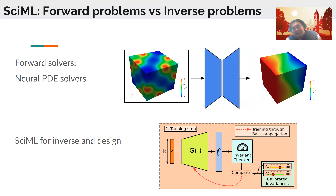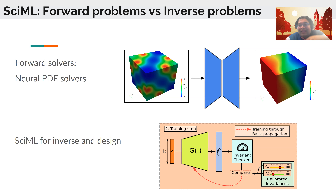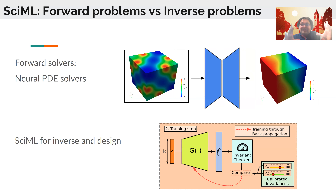Once training is amortized, inference is blindingly fast. With parametric neural PDE solvers, you don't train to solve a particular instance of a PDE but train to solve a whole family of PDEs — a large set of initial conditions, boundary conditions, and coefficient fields. In one shot you train for days or weeks, and then you have a well-trained model that can make very fast and accurate predictions of your field of interest within that space.